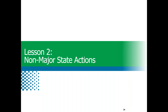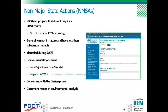In Lesson 2, we'll briefly discuss non-major state actions. Non-major state actions are those FDOT-led projects that don't qualify for the ETDM process and therefore do not require a PD&E study. Projects that proceed as non-major state actions are typically identified during the SWAP planning meeting. They're not expected to have substantial environmental impacts, but they require an environmental evaluation and completion of a non-major state action checklist prepared using the Statewide Environmental Project Tracker or SWEPT. If there are substantial impacts, then typically a SEER is prepared instead.